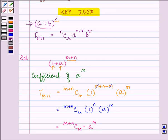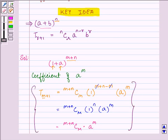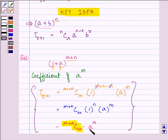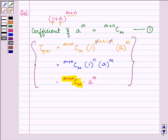From this expansion, the coefficient of a raised to the power m is (m + n)Cm. We can write this down as equation 1. Similarly, we now need to find the coefficient of a raised to the power n.